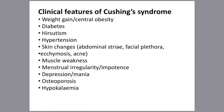Central obesity, diabetes, hirsutism, hypertension, skin changes, abdominal striae, facial plethora, ecchymosis, acne, muscle weakness, menstrual irregularities, impotence in males, depression, and mania are features of Cushing's syndrome. Cortisol also causes cortical changes, osteoporosis, and hypokalemia due to its minor aldosterone-like effect, causing sodium retention and consequently hypertension.